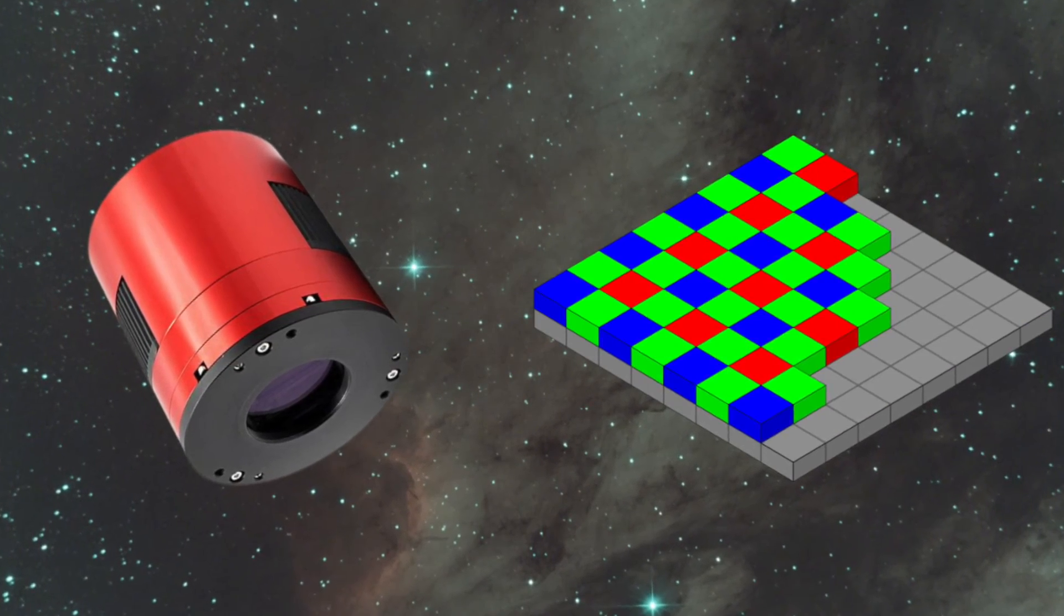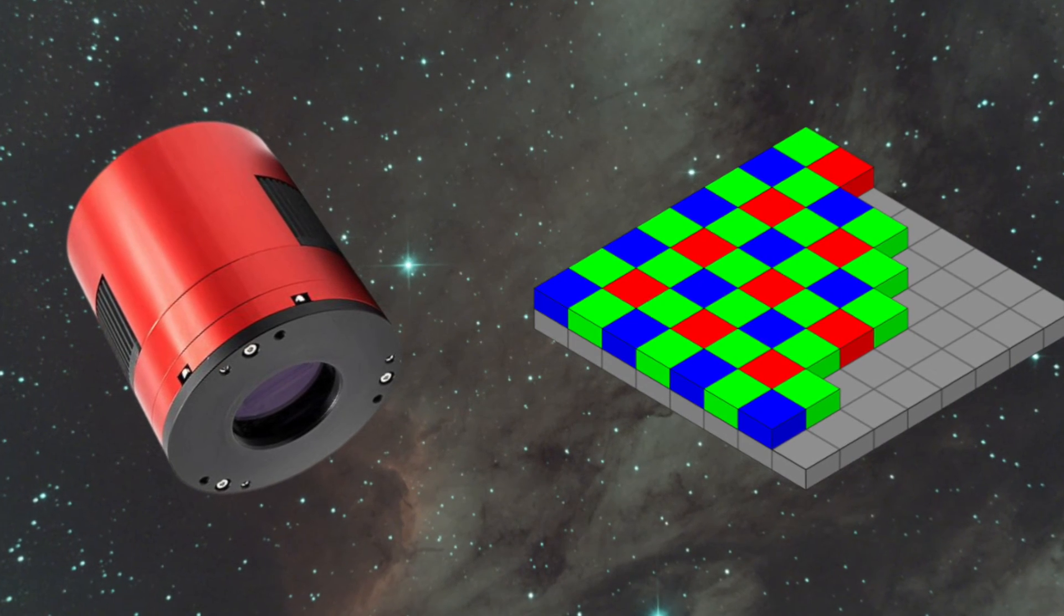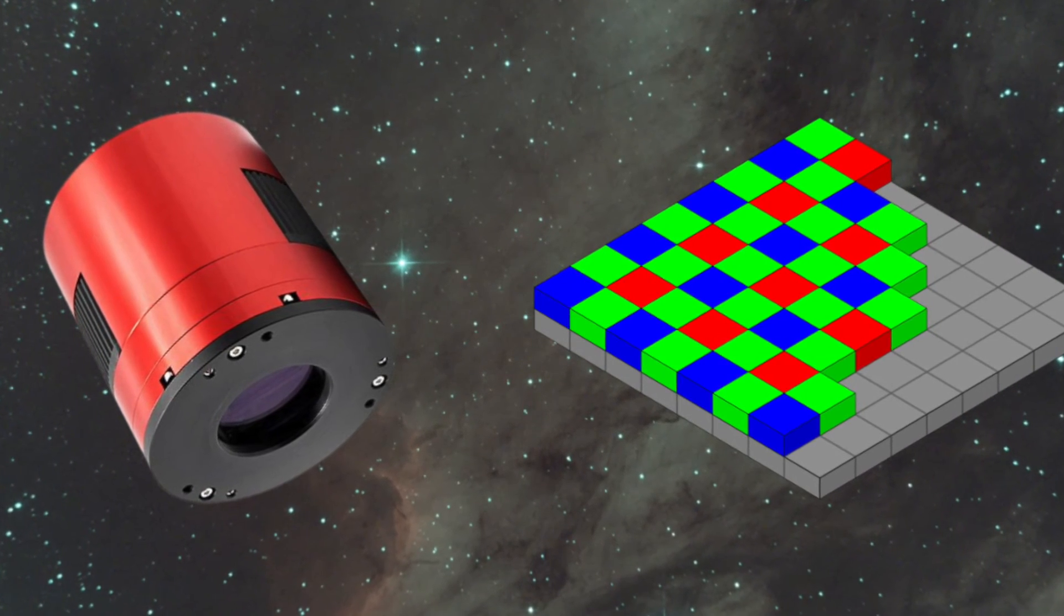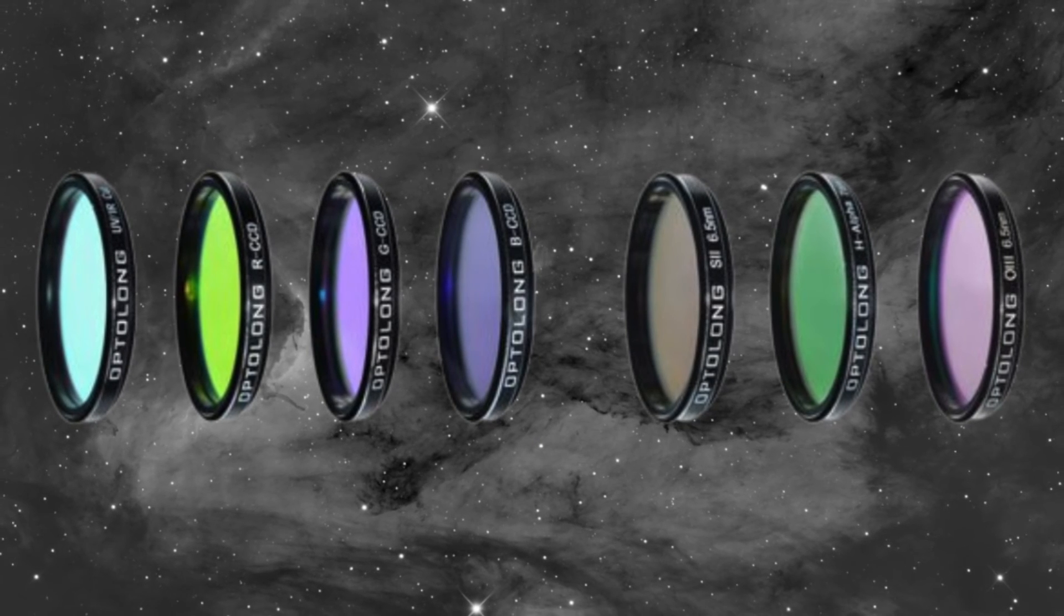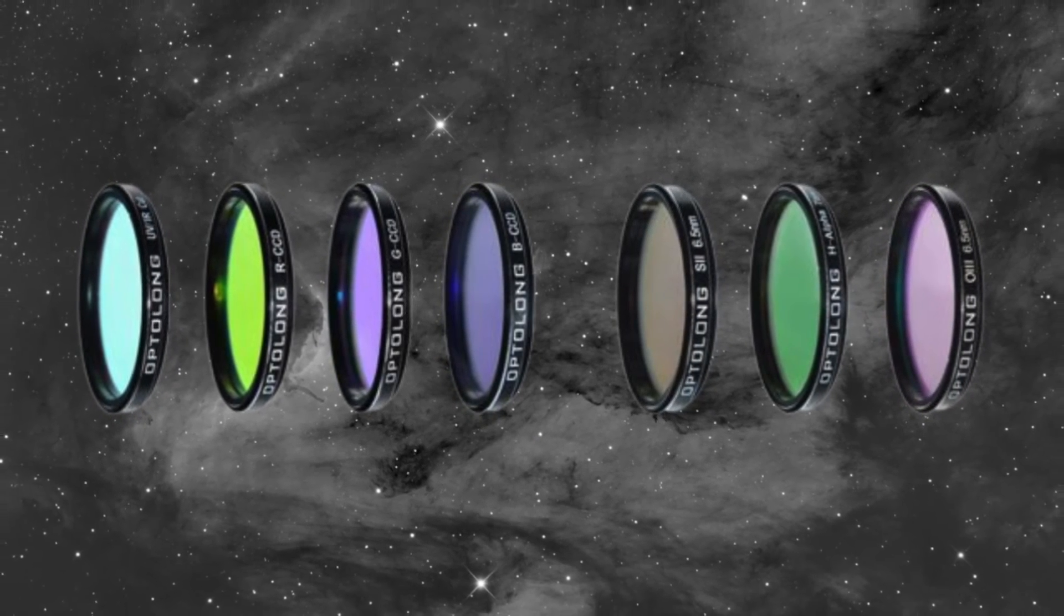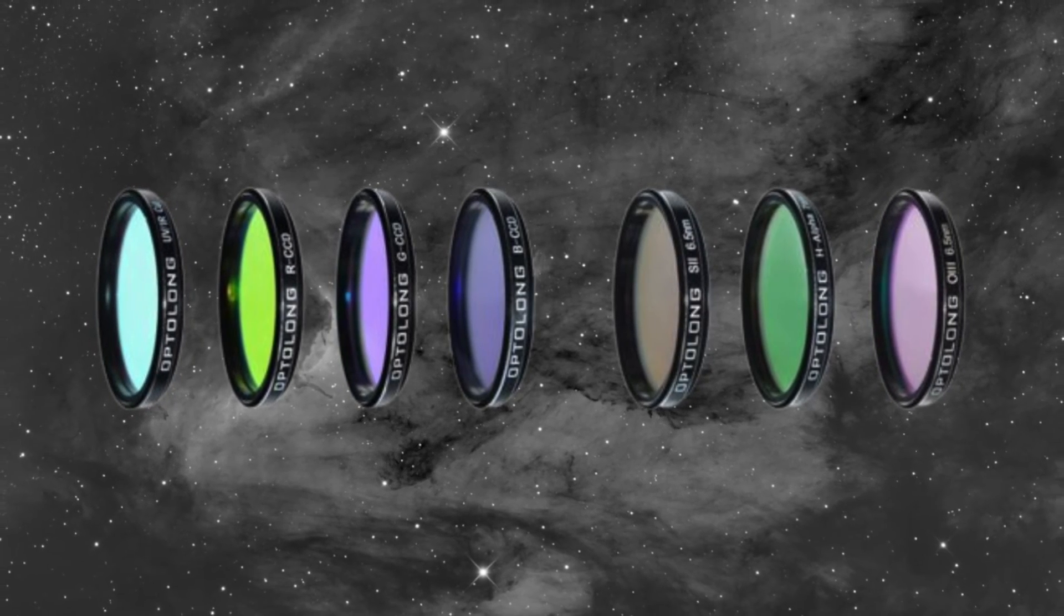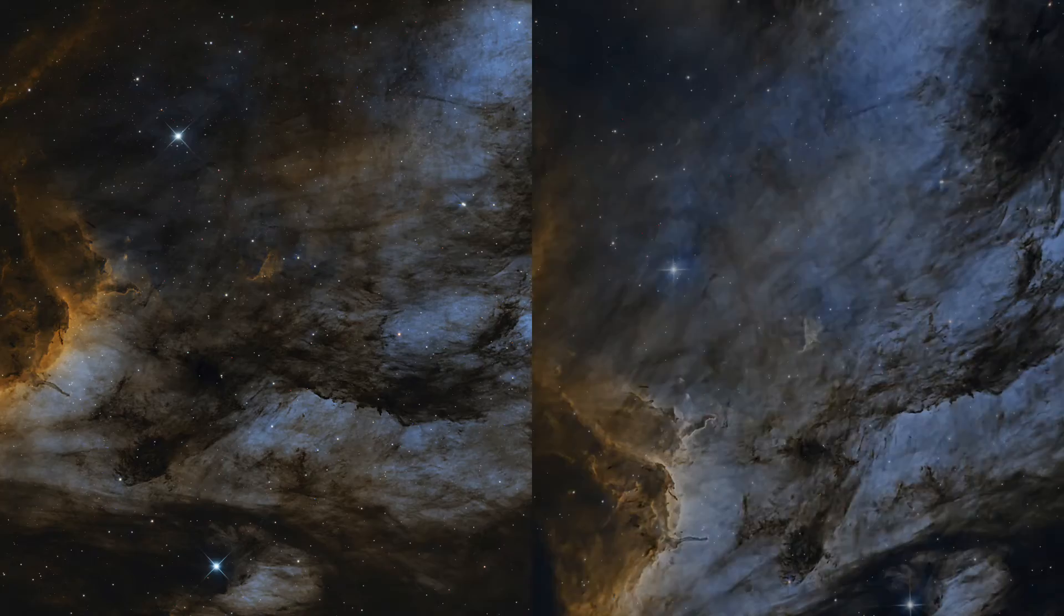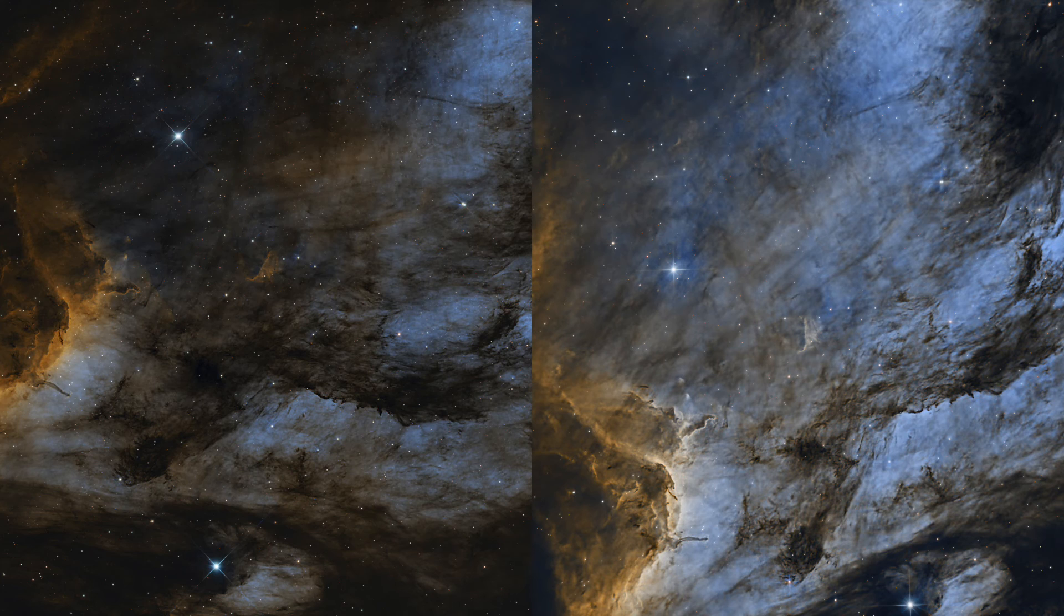If you're looking for a simple, faster setup and are okay with a bit less detail, one-shot color might be the way to go. If you're after the highest possible image quality and don't mind spending more time on setup and post-processing, mono is probably the better choice. No matter which one you choose, you're bound to capture breathtaking images of our beautiful universe.